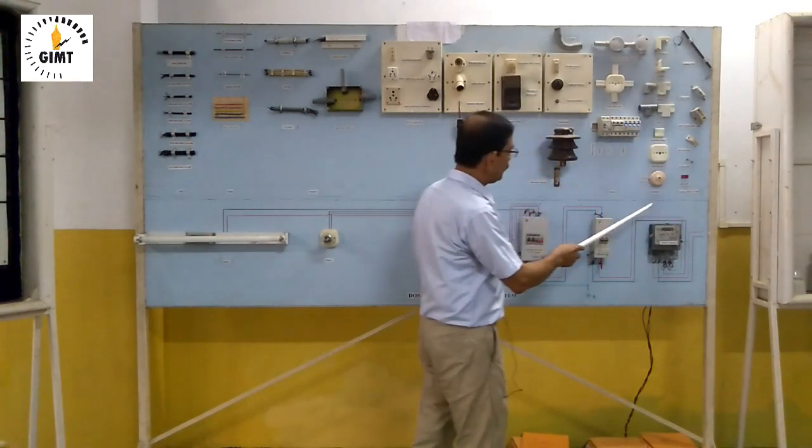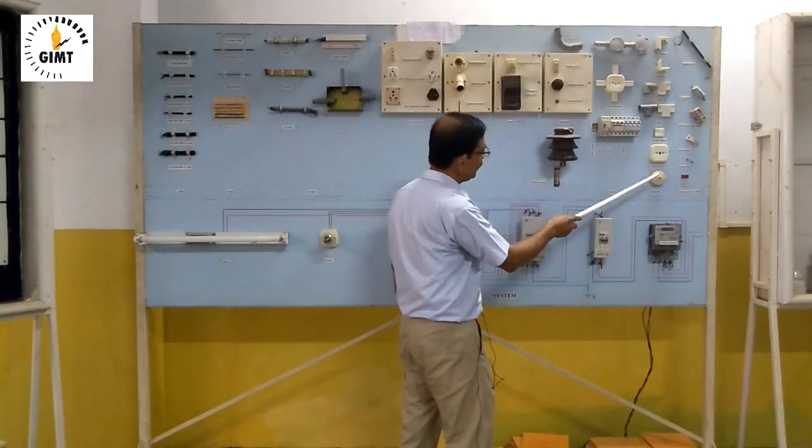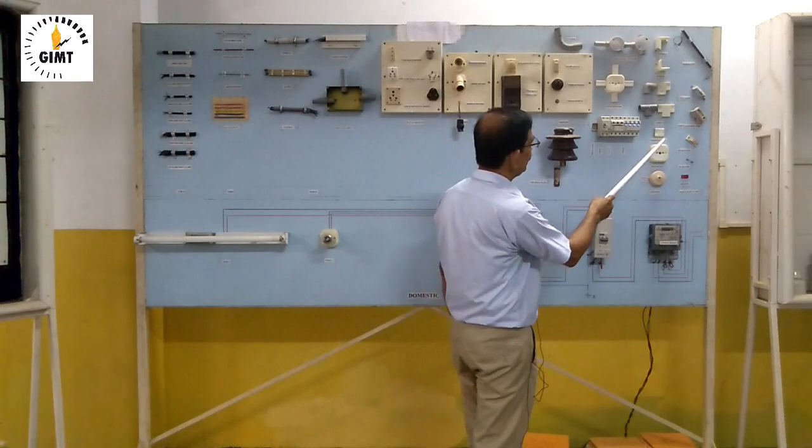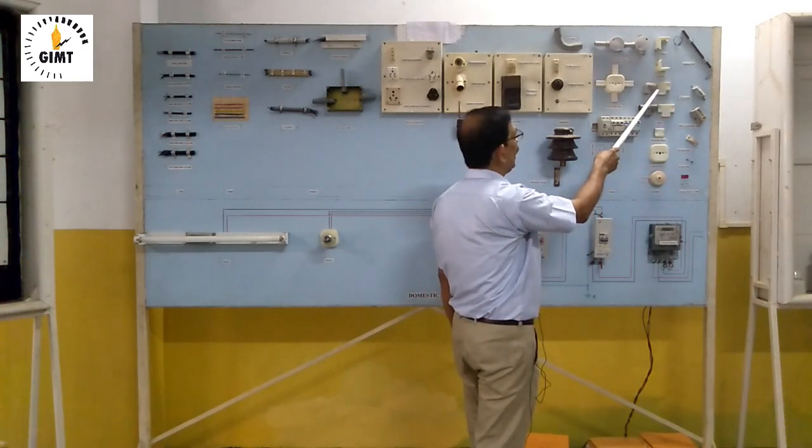Then come to the fittings. These are all different types of fittings. So this is ceiling rose, square box, straight joint, T joint, and L joint.